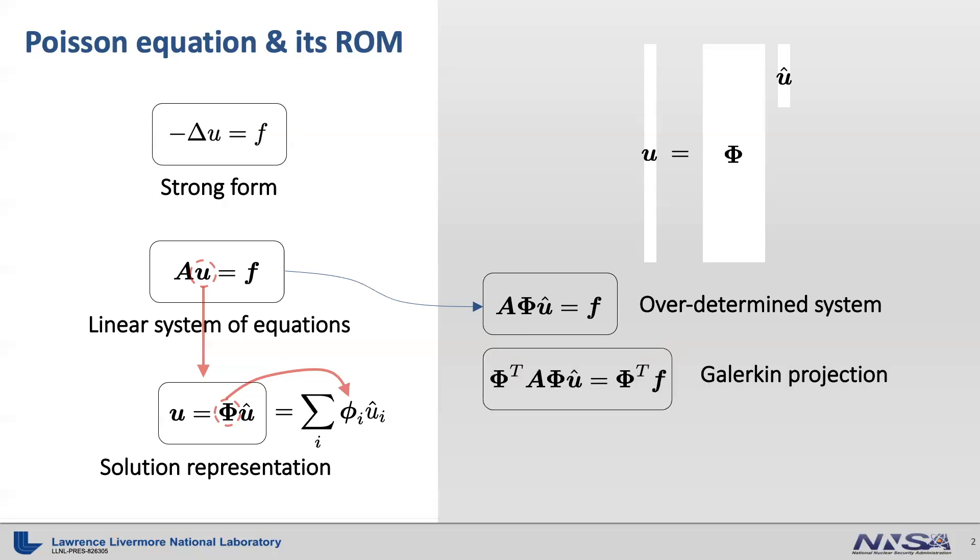One way of closing the system is to apply Galerkin projection by multiplying both sides by phi transpose, resulting in phi transpose times A times phi times U hat equals phi transpose times f. We can define A hat equals phi transpose A times phi, and the reduced right-hand side vector f hat equals phi transpose f. Note that these are reduced operators, because the size of the reduced matrix and vector are small. Therefore, solving this reduced system of equation will be very fast, which gives U hat equals A hat inverse times f hat.